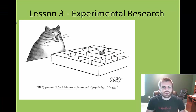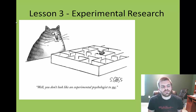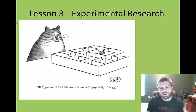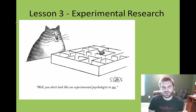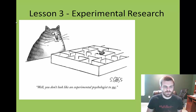Welcome back to another video in the AP Psychology series. This is lesson number three on experimental research, and this is going to be a really quick video. Basically what we're going to look at is the parameters around what experimental research is and how it's going to be different from more of the descriptive correlational style research that will be covered in the next video.